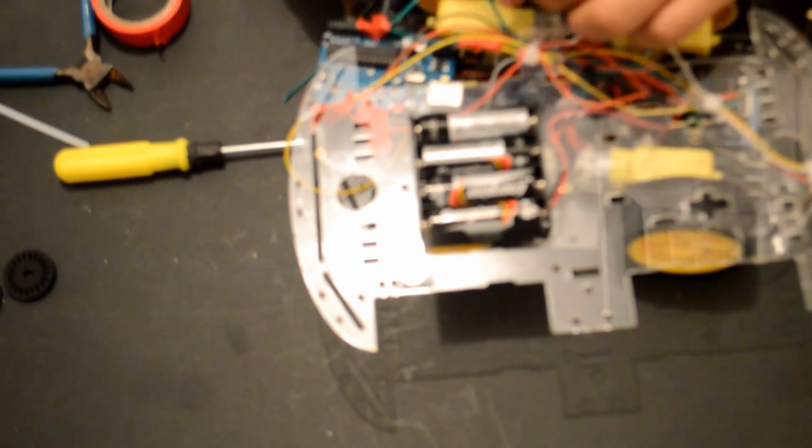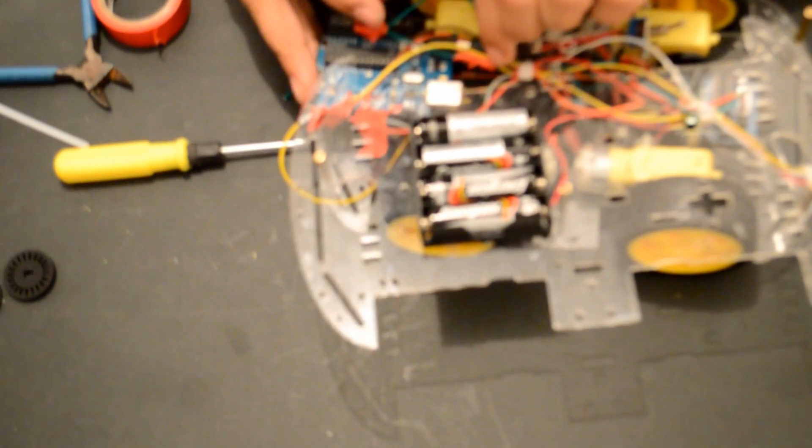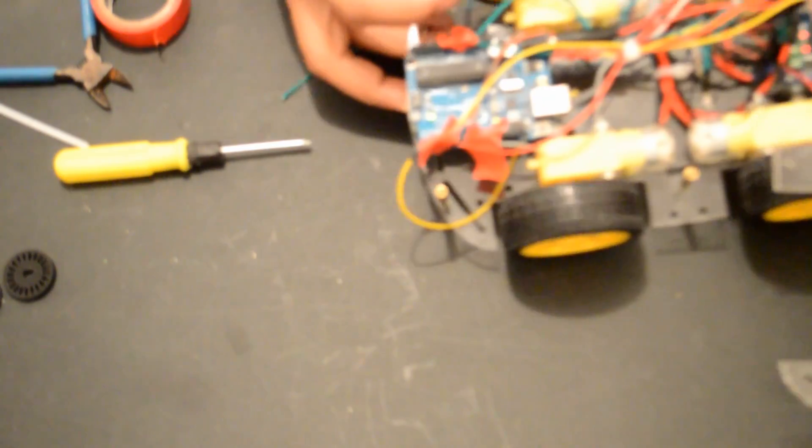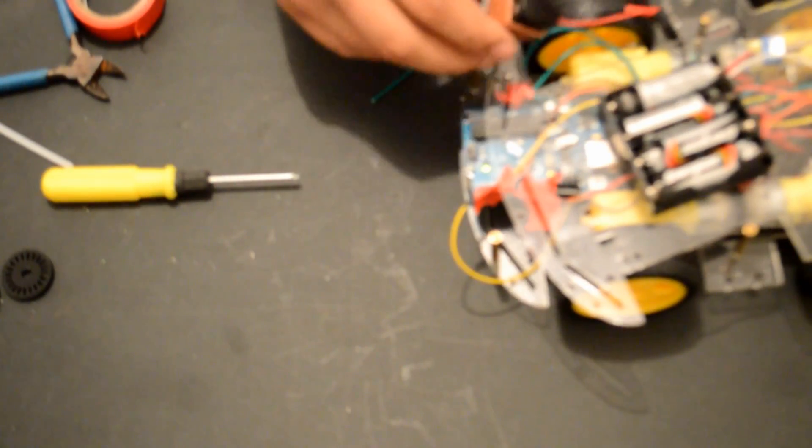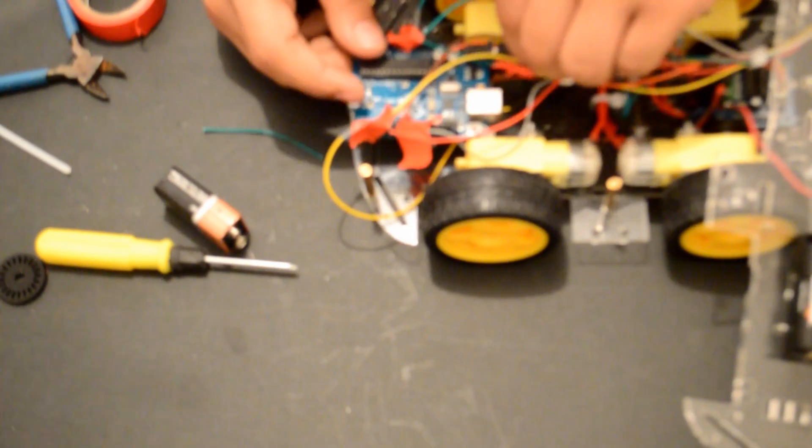Now it's time to test if everything is working fine. So I will be using this 9 volt battery to test. Everything seems to work perfectly fine. You can see the wheels work as expected. So let's connect the switch and the battery holder and we will be done.